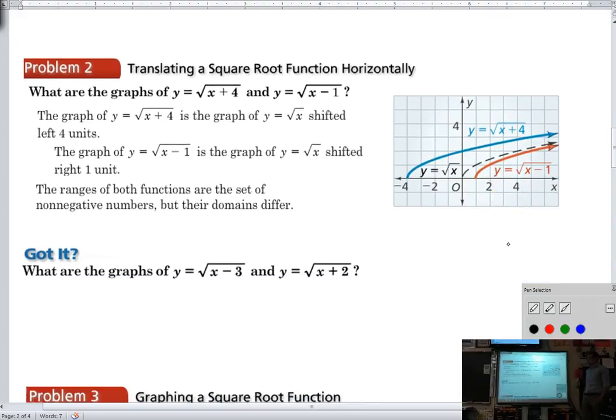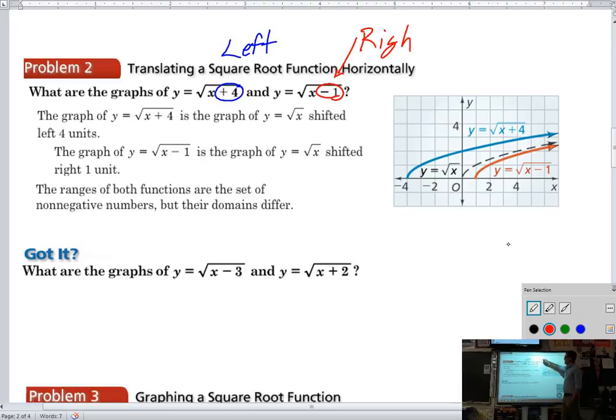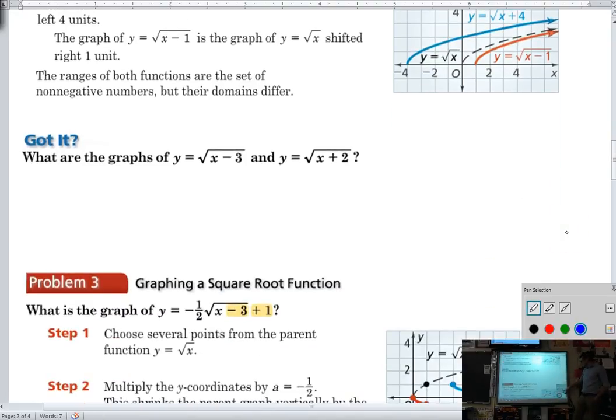So now we look at horizontal changes. When you have x plus four under the radical, what does that do to the function? It takes it left four. So just like we've seen before, when it's inside of the function, it is counterintuitive. So a positive will move left, and a negative or a subtraction will actually move it right.